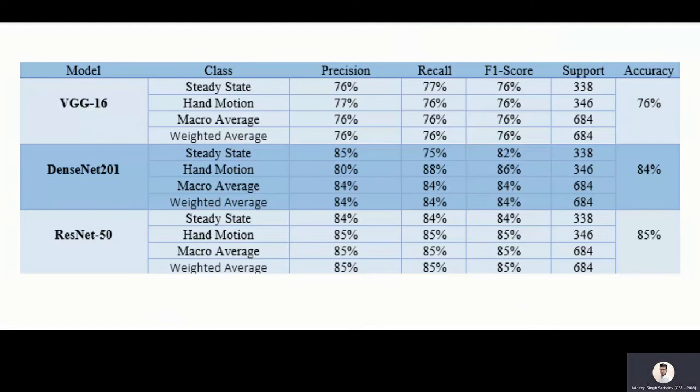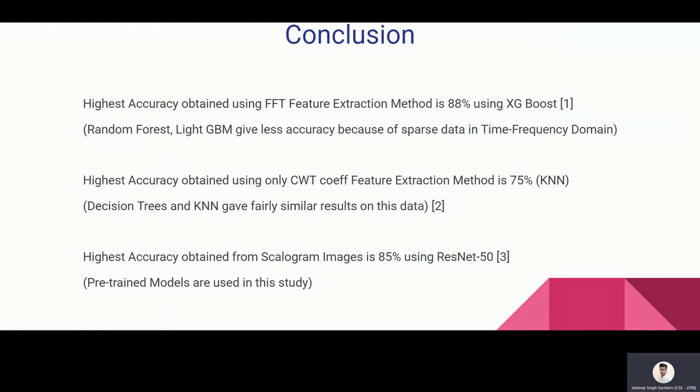And at last, I want to conclude that the highest accuracy which we obtained was using FFT, which I got 88%, and why it was so because of sparse data. The highest accuracy from only CWT coefficients was 75%, which was using KNN. And the highest accuracy obtained from scalogram images is 85% using ResNet. Why I use ResNet? Because when I was doing a literature review, they use the same CWT pipeline and ResNet performed well.